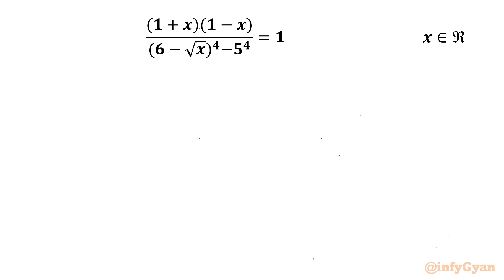Welcome back to Infigyan, my dear friends. In today's video we have one very interesting question from radical equations: (1 + x)(1 - x) over (6 - √x)⁴ - 5⁴ = 1. We have to find the real solutions.